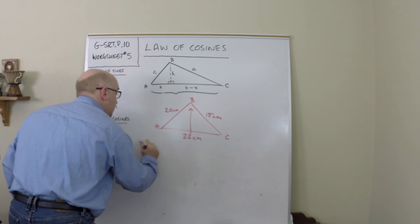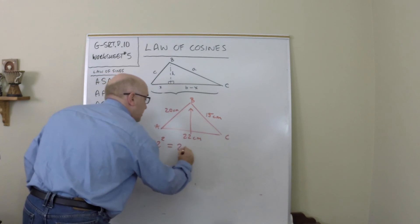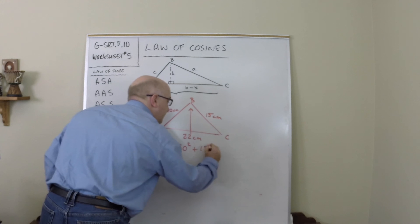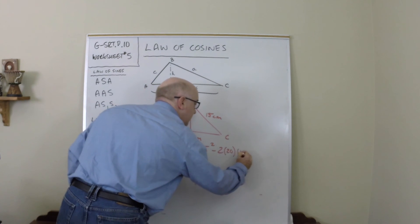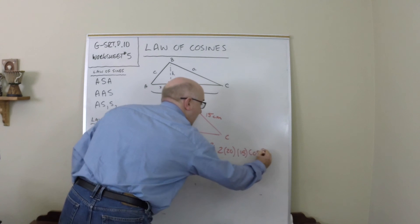So it would be b squared, well actually we know what b squared is: 22 squared equals 20 squared plus 15 squared minus 2 times 20 times 15 times the cosine of b.